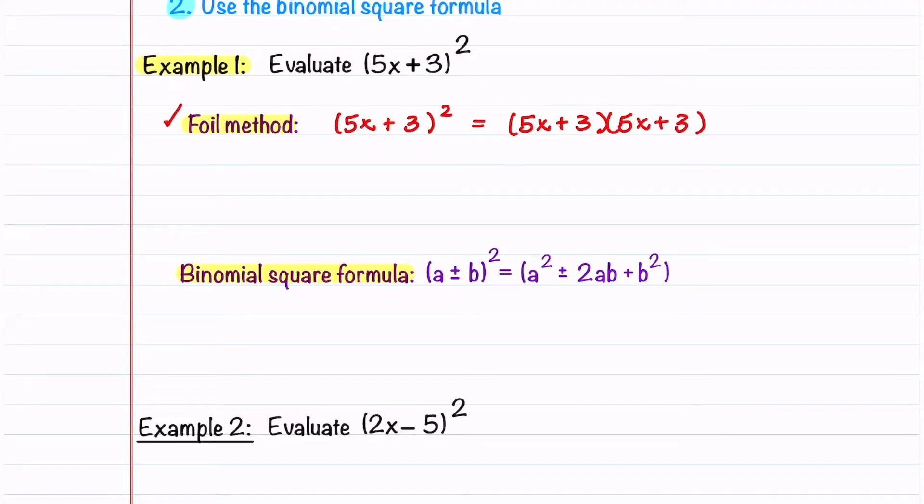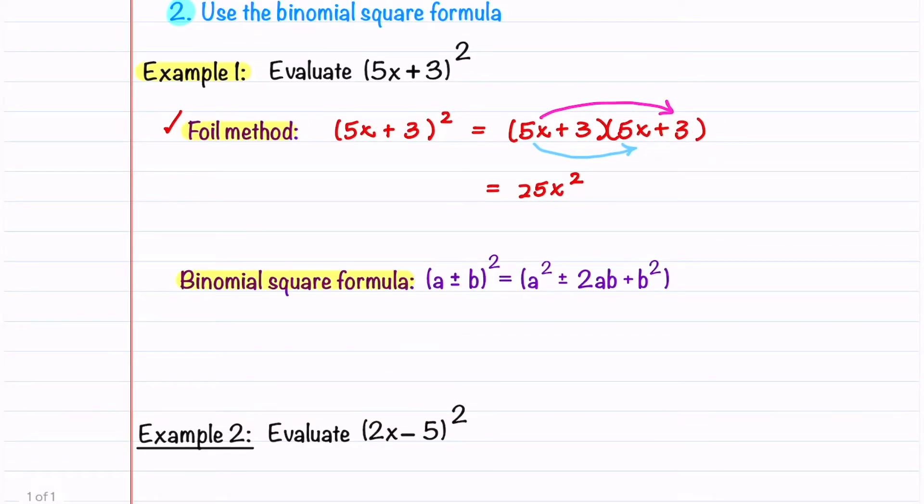F stands for first and we multiply the first terms and get 25x². O stands for outer and we multiply the outer terms and this gives us another 15x. And then L stands for last and we multiply our last terms and we get 9. We'll now combine like terms and write our final answer. This gives us 25x² + 30x + 9.